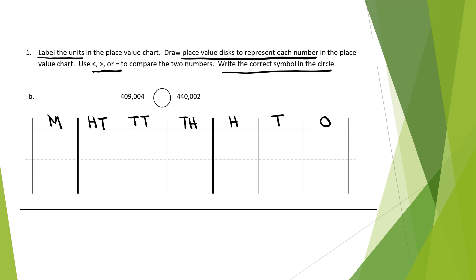Then I have to draw the place value disk for each number. So I'm going to start with 409,004. So I have 4 in the ones place, nothing in the tens, nothing in the hundreds, 9 in the thousands spot. And notice that I'm grouping my numbers in groups of 5 so I can easily count later. Nothing in the ten thousands and then 4 in the hundred thousands.